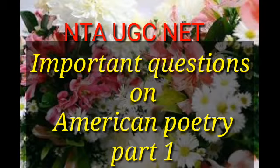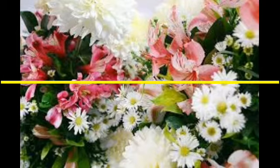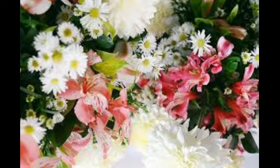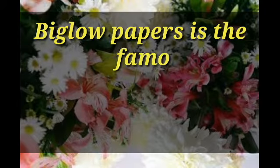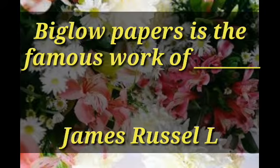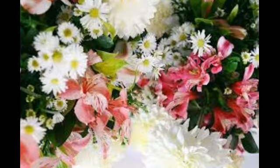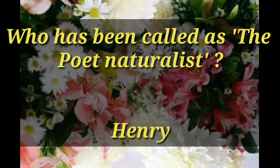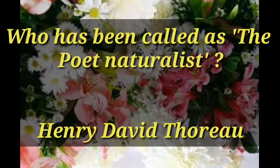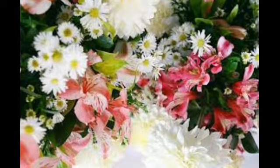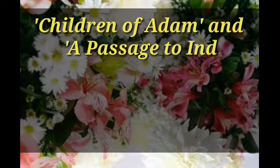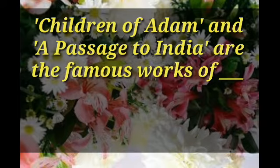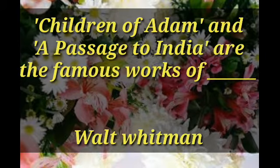In this video we'll be seeing some important questions on American poetry. Biglow Papers is the famous work of — the answer is James Russell Lowell. Who has been called the poet naturalist? The answer is Henry David Thoreau. Children of Adam and A Passage to India are the famous works of — the answer is Walt Whitman.